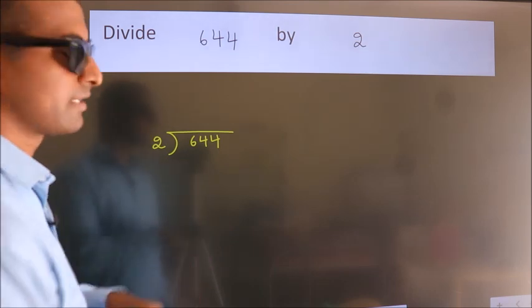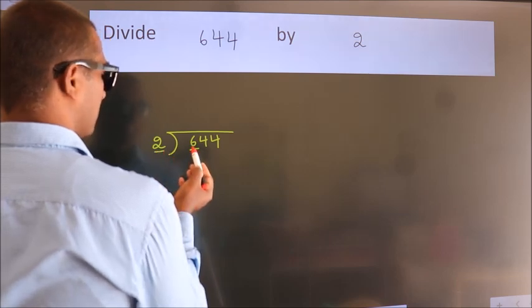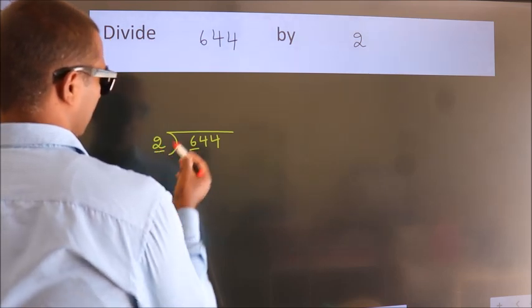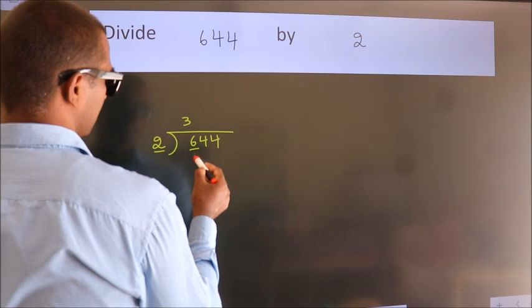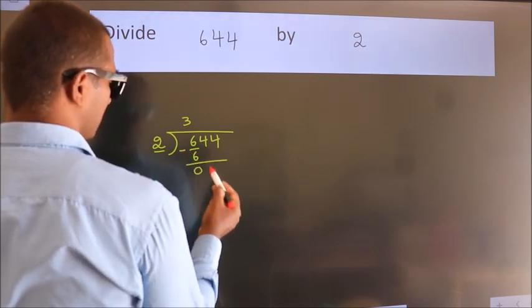Next. Here we have 6. Here 2. When do we get 6? In 2 table. 2 times 3 is 6. Now we should subtract. We get 0.